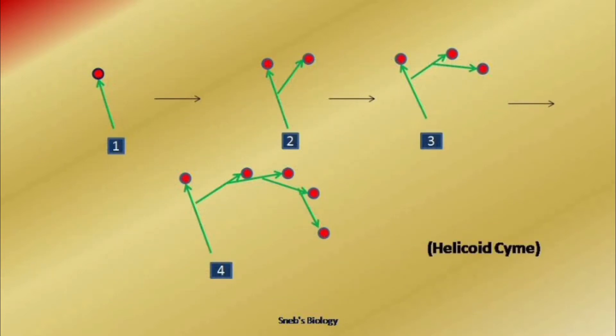Helicoid means the branches always arise on the same side. Look at the diagram — the main axis terminates into a flower. When it gives rise to a branch, that branch is on the right side and also terminates into a flower. It again produces a branch that terminates into a flower, and every time it comes on the right side.